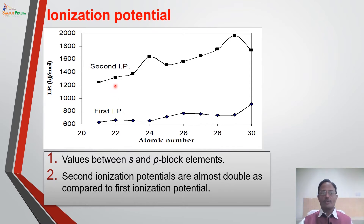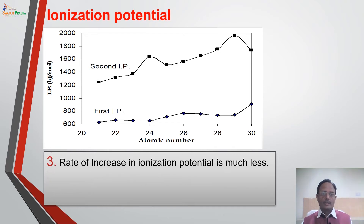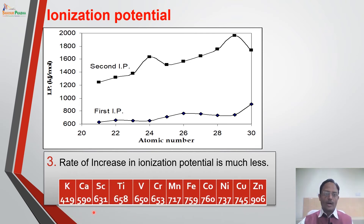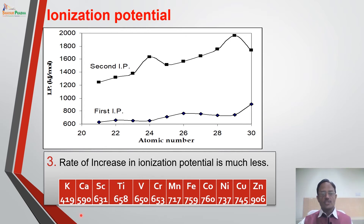This is quite obvious because more energy is required to remove an electron from a cation compared to a gaseous atom. The third important observation is the rate of increase of ionization potential — the ionization potential is increasing, but the rate of increase is much less. Comparing with S block elements: when going from potassium to calcium, the increase in ionization potential is 419 to 590, an increase of about 171 kJ in a single atomic number. When going from scandium to titanium, the increase is just 27 kJ per mole.